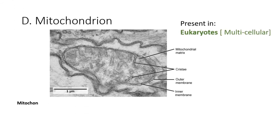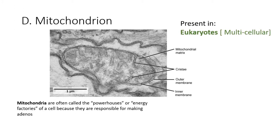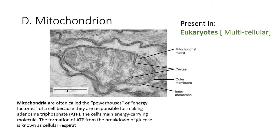Mitochondria are often called the powerhouses or energy factories of a cell because they are responsible for making adenosine triphosphate (ATP), the cell's main energy-carrying molecule. The formation of ATP from the breakdown of glucose is known as cellular respiration.